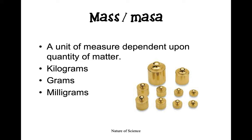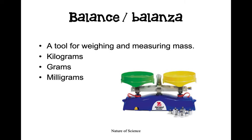Milligrams are followed by grams, which are much larger, and kilograms, which are even larger. For example, a paper clip weighs about one gram because it doesn't weigh very much. If we wanted to weigh an elephant, we'd use kilograms because kilograms are the largest way to measure mass. We find mass using a tool called a balance — a balance is a tool for weighing and measuring mass in kilograms, grams, and milligrams.